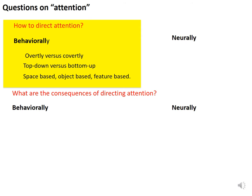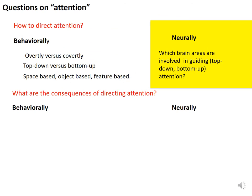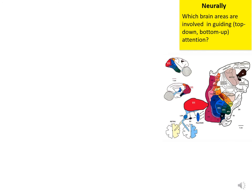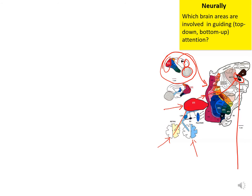We have seen how to direct attention behaviorally. Now let's look at the physiological level — which brain areas are involved. Here is the folded monkey's brain, viewed from the side. When the cortical sheet is unfolded, we see two retinas sending information to V1, the primary visual cortex, then continuing to V2, V3, and so on, up to the frontal part. FEF stands for frontal eye field. SC stands for superior colliculus, which is involved in guiding eye movements. We can look at which brain areas send input to the superior colliculus, as they might be involved in guiding attention. V1 sends input directly to the superior colliculus, as does the retina.